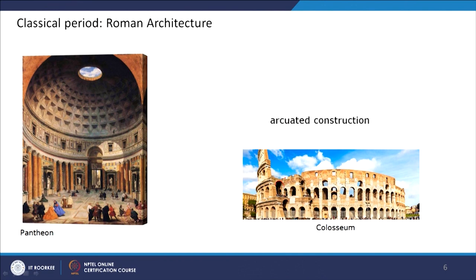In Rome, they were more advanced in construction technique. They started making arches — so it is more archivated — and they started using concrete in many structures, so this was stone as well as concrete. When you make an arch and rotate it in a different direction you get a dome. This is seen in the dome of the Pantheon in Rome.